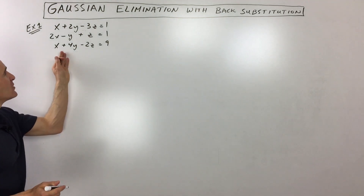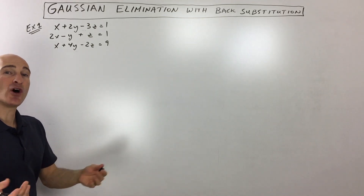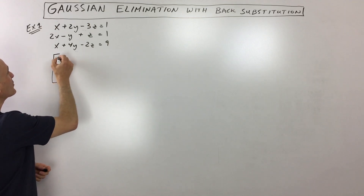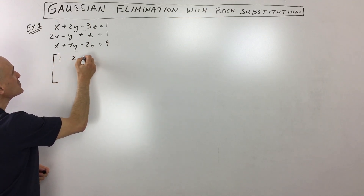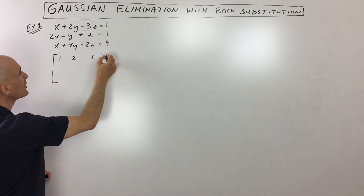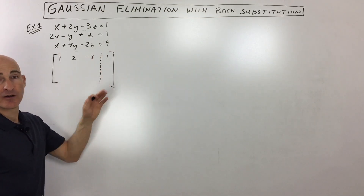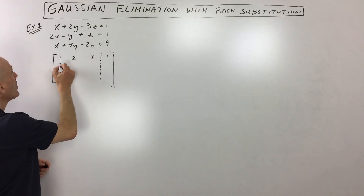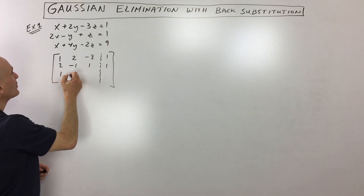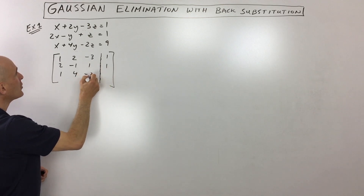The first example has three equations and three variables. Our first step is to write it as an augmented matrix. An augmented matrix uses the coefficients — the numbers in front of the variables — and also adds the solutions in the right column. So I'm just writing down those coefficients, writing down the answers, and separating them with a dashed line.